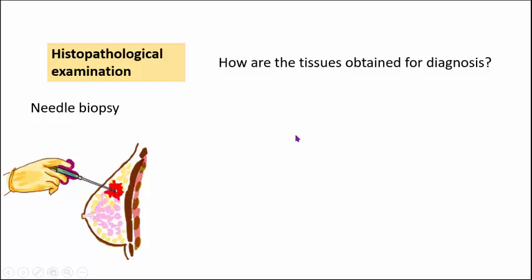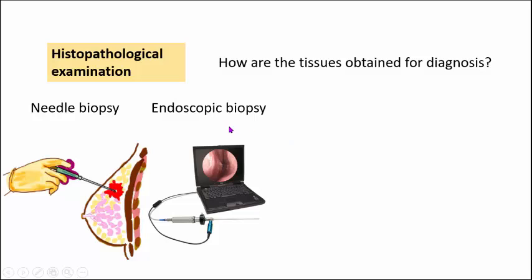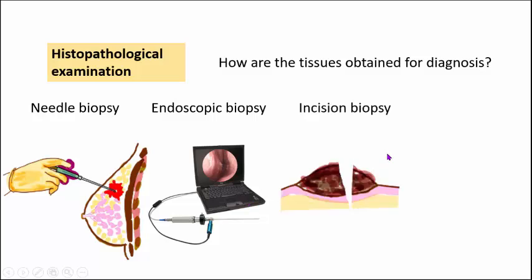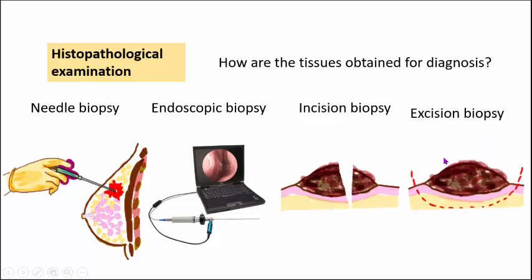The second tissue-obtaining method is endoscopic biopsy. Particularly for GI malignancies, you perform upper GI endoscopy or colonoscopy to find lesions in the gastrointestinal tract and take a biopsy using endoscopic procedures. The third is incision biopsy, where you take a part of the lesion along with normal tissue to study it. The fourth is excision biopsy, where you take off the entire tumor along with the normal uninvolved tissue to make a diagnosis.